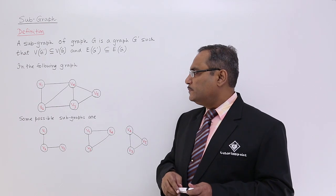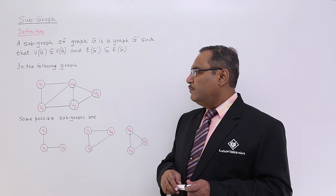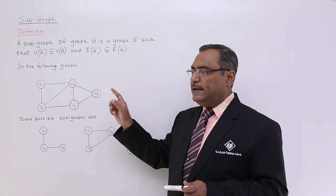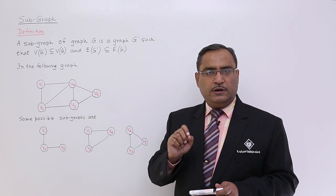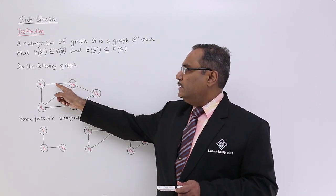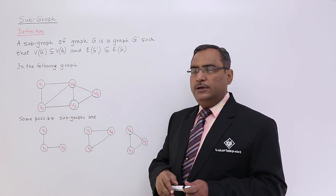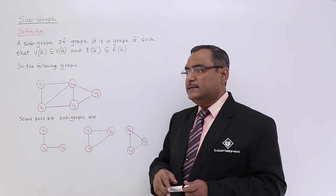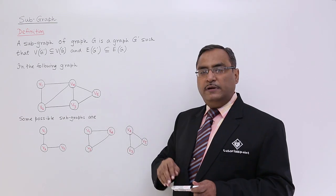Now here we have this particular graph given. V1, V2, V3, V4, V5. For the particular set V, we are having 5 members: V1 to V5. And here we have some set of edges. We have 7 edges: 1, 2, 3, 4, 5, 6, 7. This is the graph given.